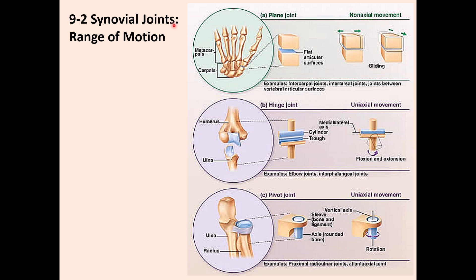Synovial joints are classified based on their range of motion, corresponding to the three body planes: sagittal, coronal, and transverse. There are four classifications by range of movement. The first is non-axial, called plane joints, where bones glide or slide over one another without a specific axis. Good examples are the carpal bones in the wrist, tarsal bones in the ankle, and the facet joints between vertebrae — all flat surfaces sliding on each other.